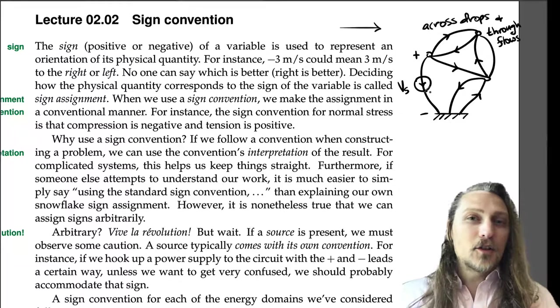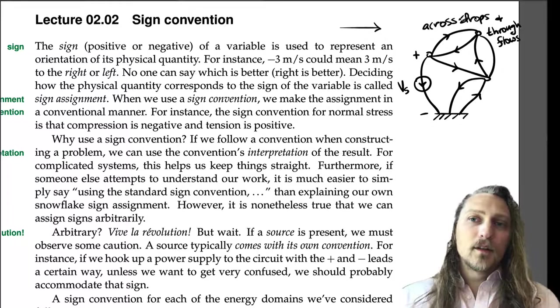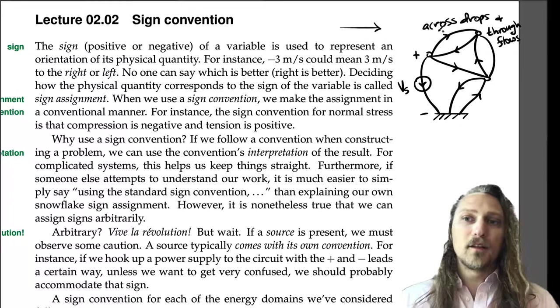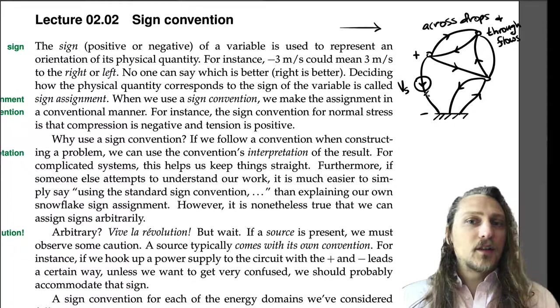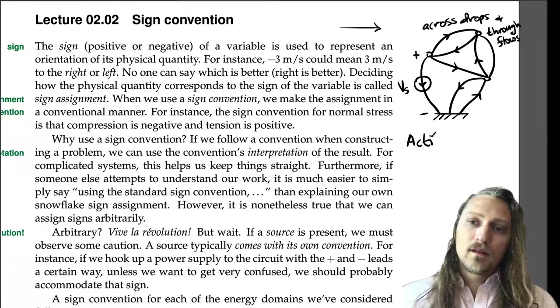Now, this passive sign convention for passive elements has the direction of the across variable drop and through variable flow in the direction of the arrow. For active elements, it's actually a little bit different.